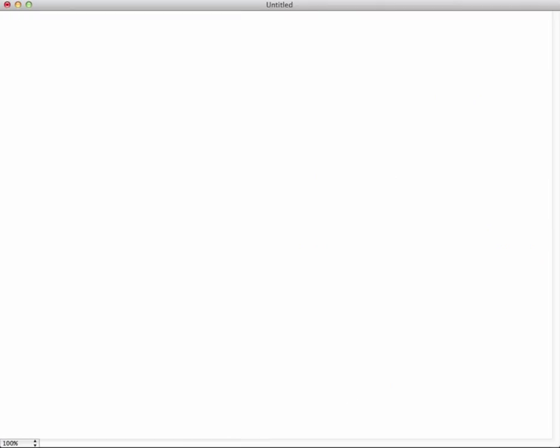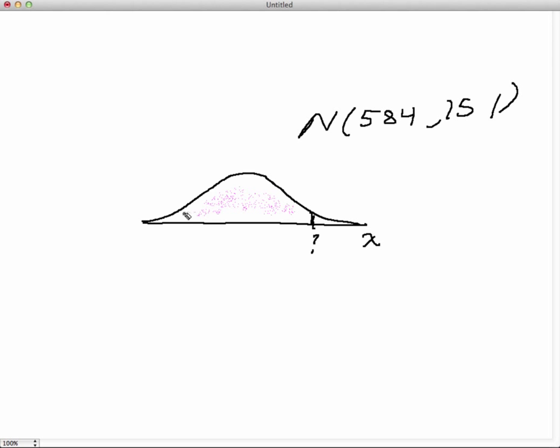So here we go. We're going to go ahead and make ourselves a drawing of the model that we want. So in this particular case, we know that this is a normal distribution with a mean of 584 and a standard deviation of 151. And what they want from us is they're looking for in this case, here's x again, is they want to know what is that position on the axes right here.